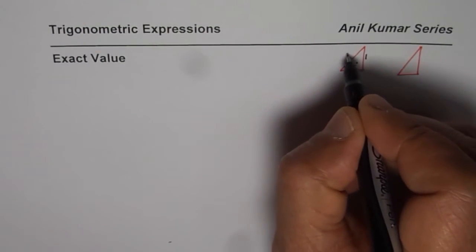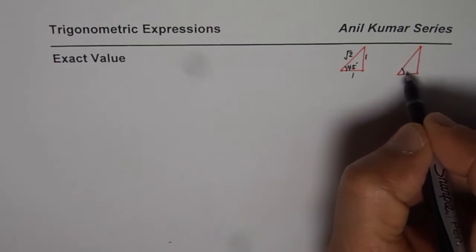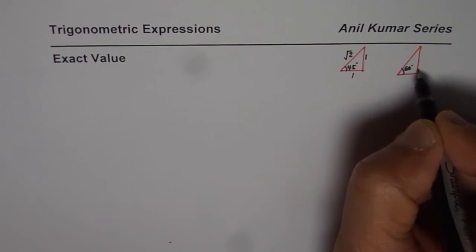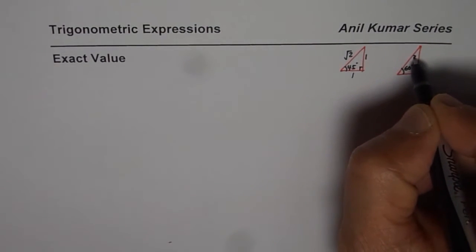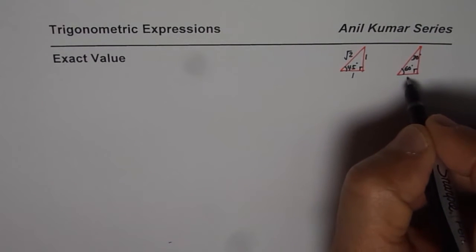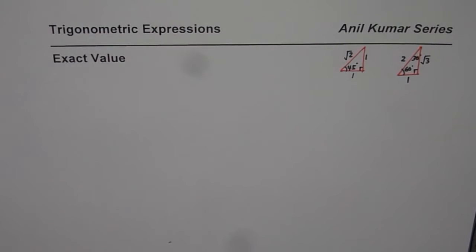Let's consider this as a 45 degree triangle first - the sides are 1, 1 and the hypotenuse square root 2. If I have a 60, 30 triangle with 90 degrees, then the sides are 1, 2 and square root of 3. So these are very special triangles which we can always use.